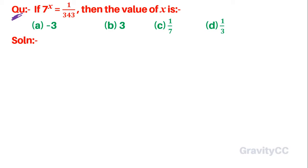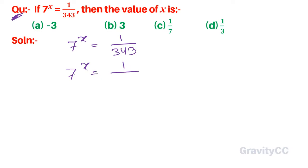Given: if 7 to the power x is equal to 1 upon 343, find the value of x. So 7 to the power x is equal to 1 upon 343, which is 1 upon 7 to the power 3.